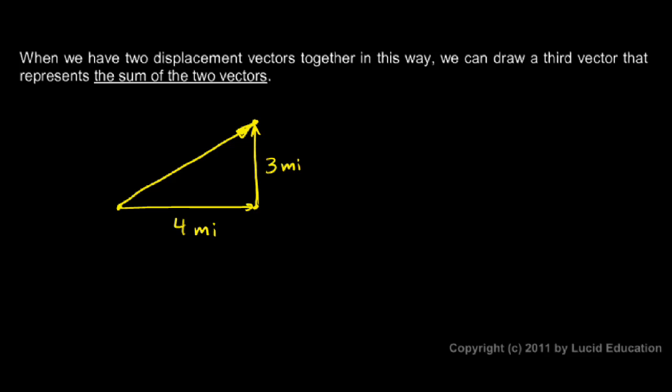It's pointing from the starting point to the ending point. So it's pointing this way. This third vector that I've just drawn represents the sum of the other two. That is the vector that I get when I add the four miles east and the three miles north.